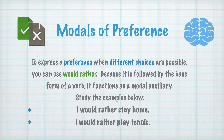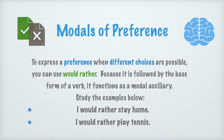To express a preference when different choices are possible, you can use 'would rather.' Because it is followed by the base form of a verb, it functions as a modal auxiliary. Study the examples below. Para expresar preferencia cuando diferentes opciones están disponibles, se usa 'would rather.' Porque se sigue de la forma base del verbo, funciona como un modal auxiliar. Estudia los ejemplos de abajo.